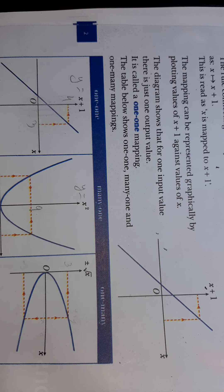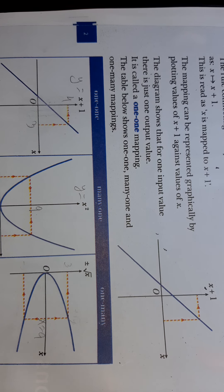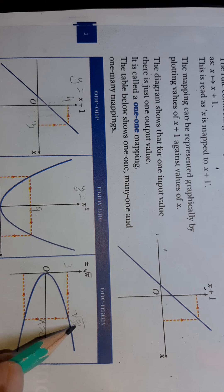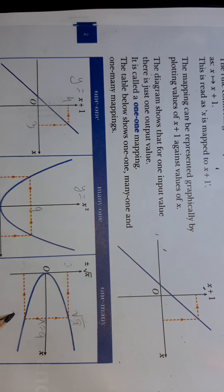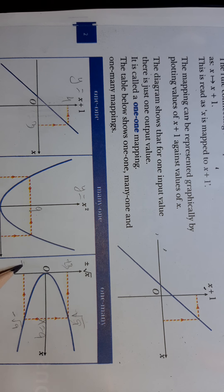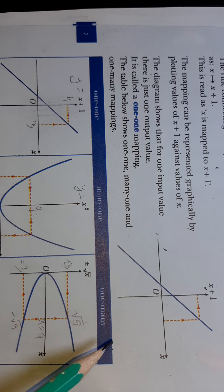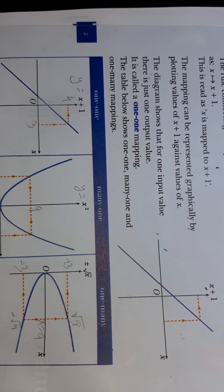For one input value, for example x = 9, there are two output values: positive root nine (+3) and negative root nine (−3). That means for one value of x we get two different values of y. This is called one-to-many — for one input value there are two output values.